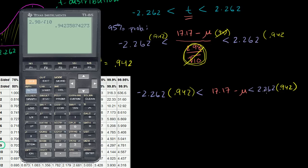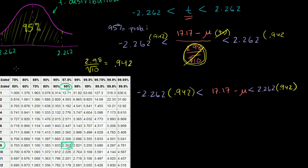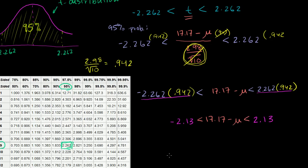So 0.942 times 2.262 equals 2.13. This number on the right-hand side is 2.13, and the number on the left is just the negative of that, negative 2.13. So we have: negative 2.13 is less than 17.17 minus the population mean, which is less than 2.13.